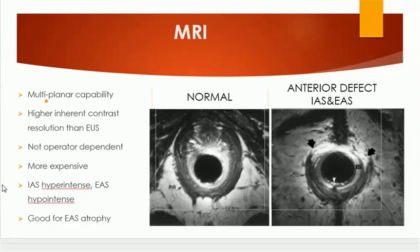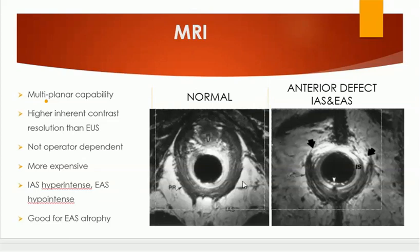MRI is the gold standard investigation for this area. It has multi-planar capability and higher inherent contrast resolution than endoluminal ultrasonography. It is not operator-dependent, though it is more expensive. On MRI, we can see both normal sphincter anatomy and anterior defects of the internal and external sphincters.